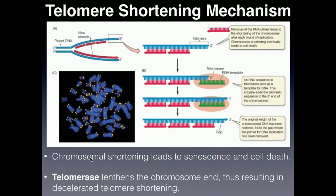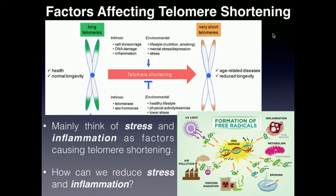If you have too much shortening, the cell becomes senescent and will eventually die. Some cells can use an enzyme called telomerase, which actually performs the opposite action — it lengthens the telomere and slows this process down. There are also a lot of environmental factors that affect telomere shortening. Generally speaking, we're not going to be able to preserve the length of the telomere forever or have a net lengthening, but we can actually slow the rate of shortening.